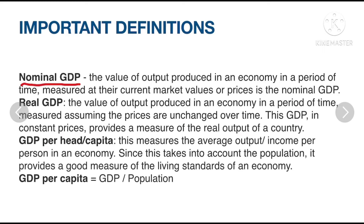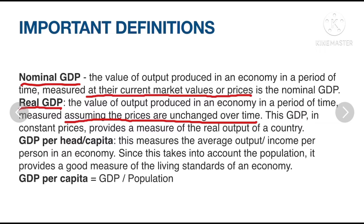Nominal GDP is the value of output produced in an economy in a period of time measured at current market values or prices. Real GDP is the value of output produced in an economy in a period of time measured assuming prices are unchanged over time. So nominal reflects current prices, while real GDP in constant prices provides a measure of the real output of a country.